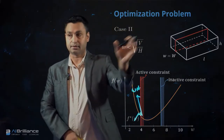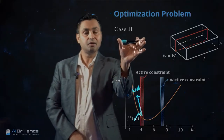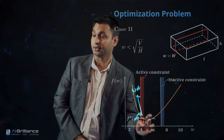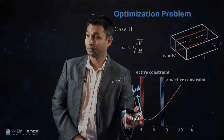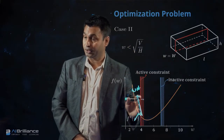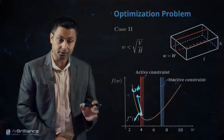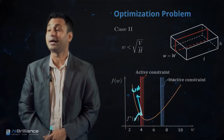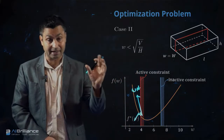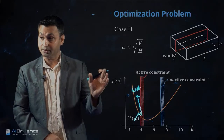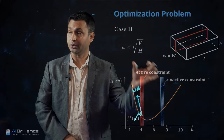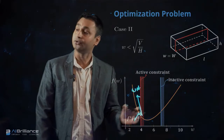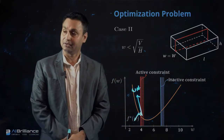By imposing this constraint on the original problem, the location of the optimal point has moved from its previous position to this new point at the intersection. The original optimal solution has changed its location, and that is why this sort of constraint — which essentially changes the location of the optimal point — is known as an active constraint. When you add this constraint to the original problem, the location of the optimal solution changes, and that is what defines an active constraint.